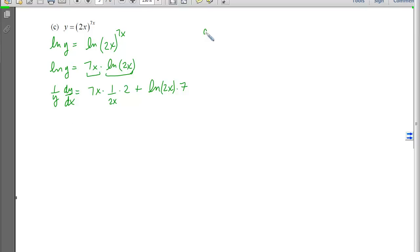If I isolate dy/dx now, I'm going to move the y to the other side, and I'm going to replace it at the same time to save myself some writing. Simplify this. The 2s cancel, the xs cancel. I have a 7, plus a 7 log natural of 2x.